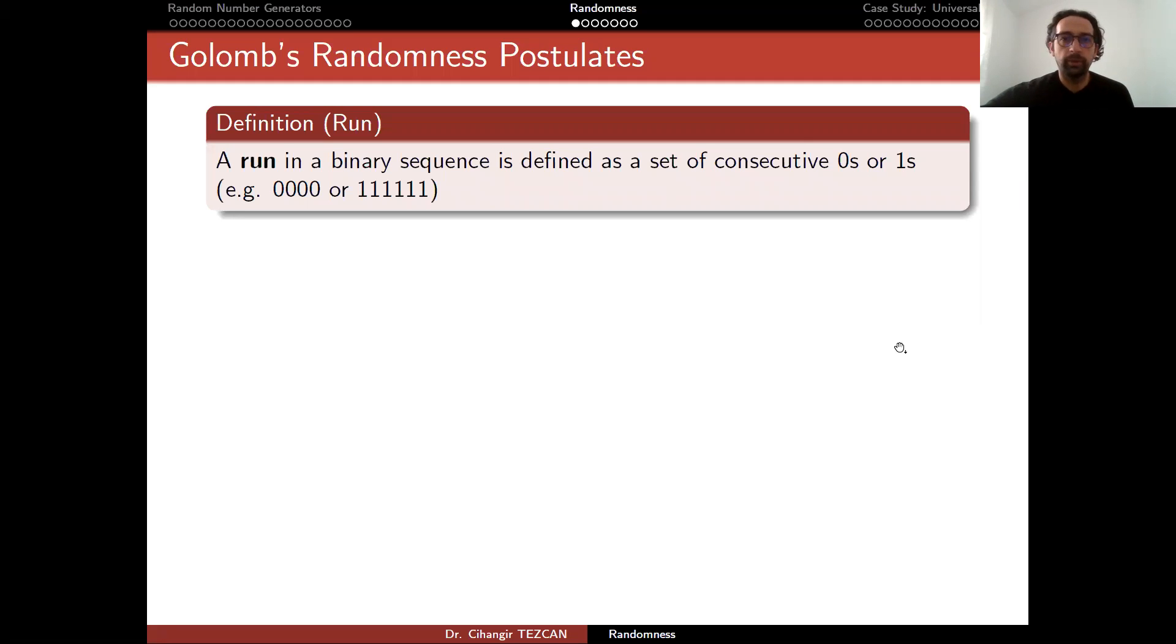Now it's a good time to talk about how to check randomness. We will start with Golomb's randomness postulates, but in order to do that, we need some definitions first. Let's start with the definition of a run.